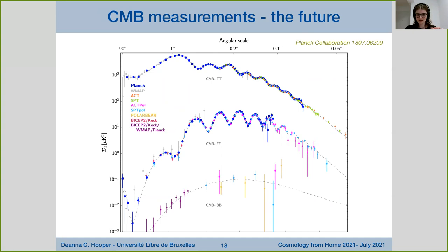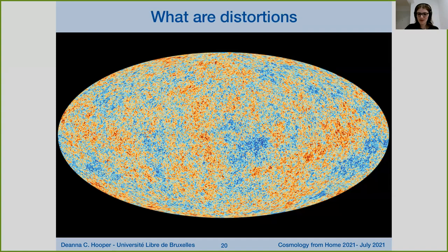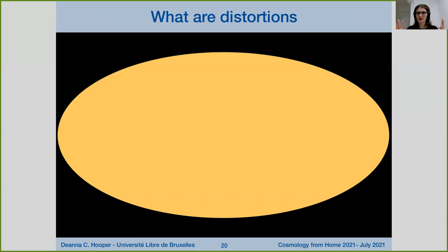Now I want to change gears and focus on CMB spectral distortions. Rather than focusing on anisotropies — the variations across the sky — I'm now interested in the overall spectrum of the CMB, the overall blackbody radiation. The CMB is an almost perfect blackbody — in fact, the most perfect blackbody found to date. However, it is not completely perfect. There are tiny deviations from this perfect blackbody which could be caused by anything that injects energy within the universe, affecting scattering or number-changing processes.